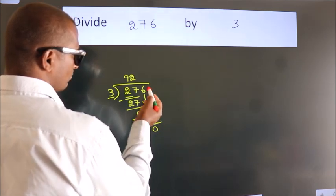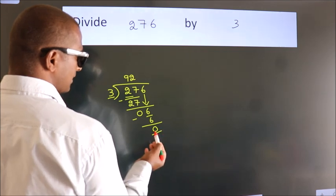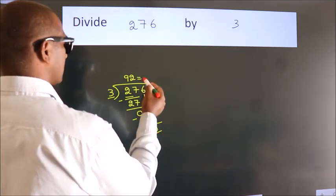After this, no more numbers to bring down. We got remainder 0. So this is our quotient.